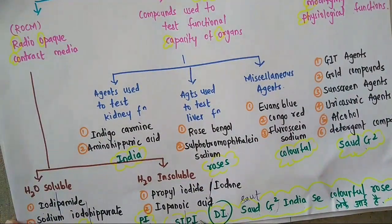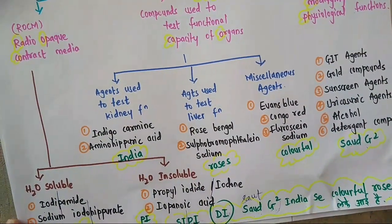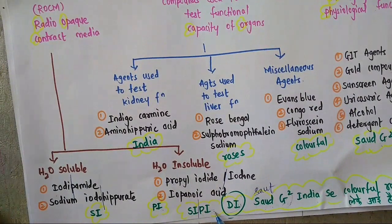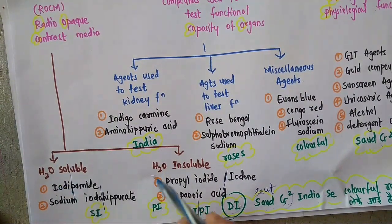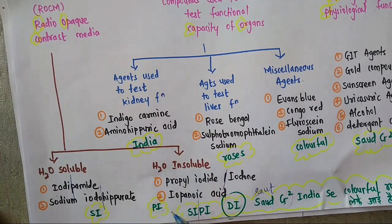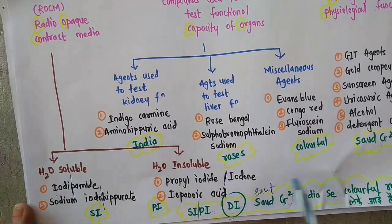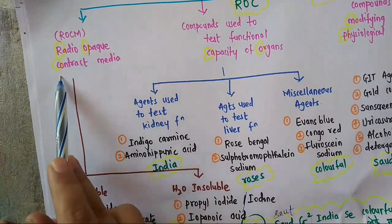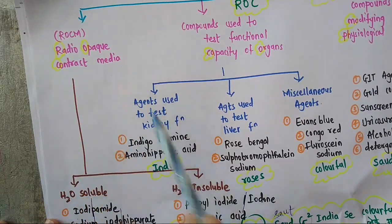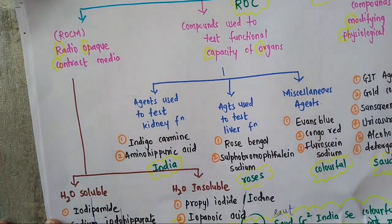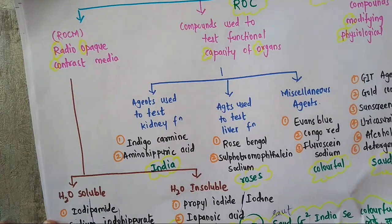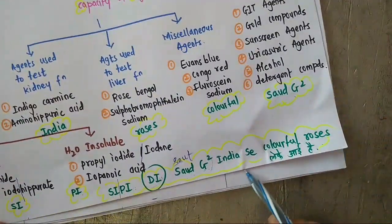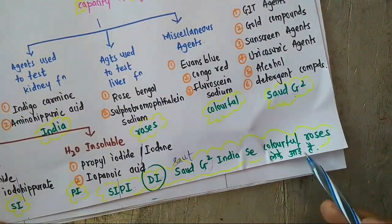'Saudji' was in MP — compounds modifying physiological function. And 'Sippi' belongs to Radio Opaque Contrast Media, where C is water soluble and P is water insoluble. So water soluble and water insoluble are the subclasses of Radio Opaque Contrast Media.